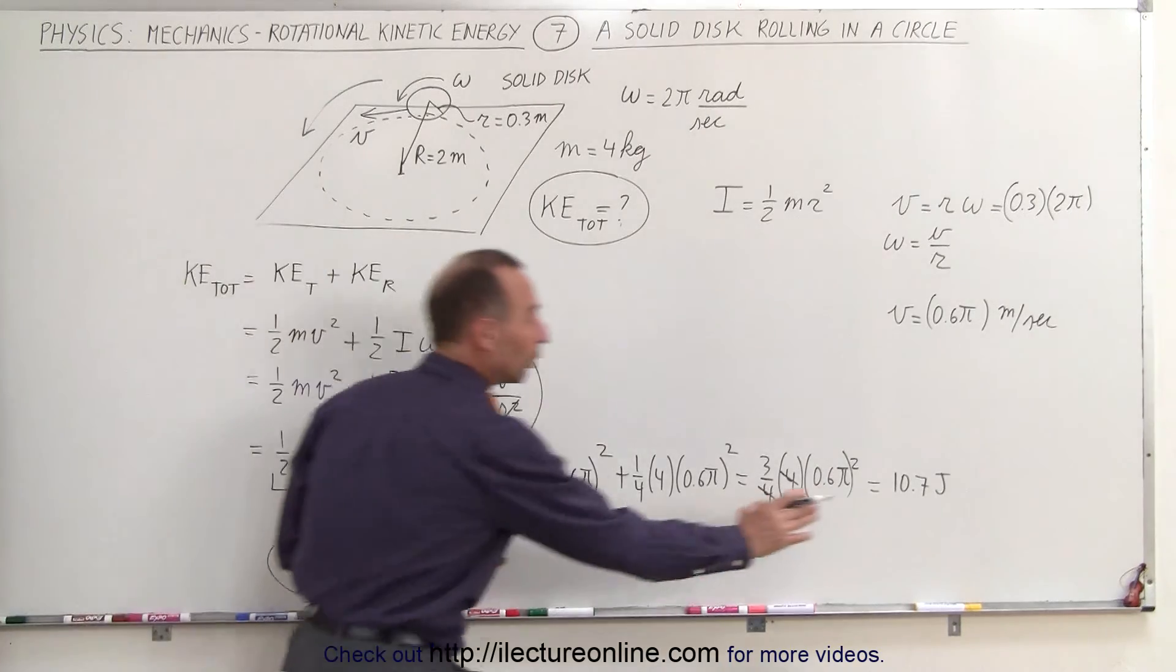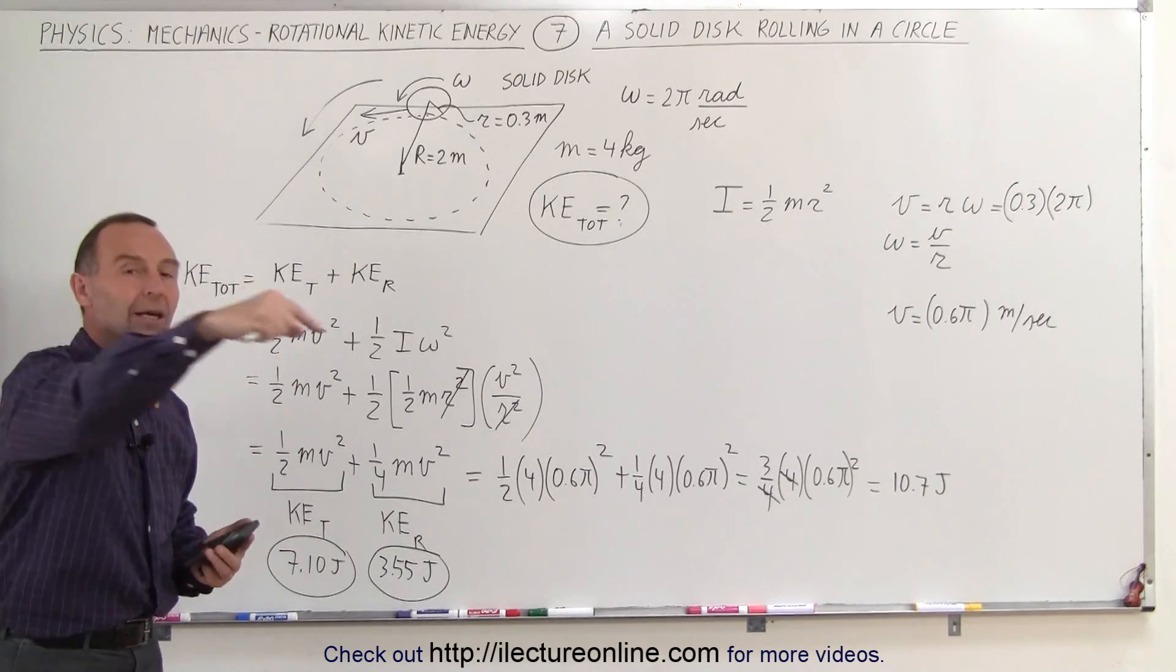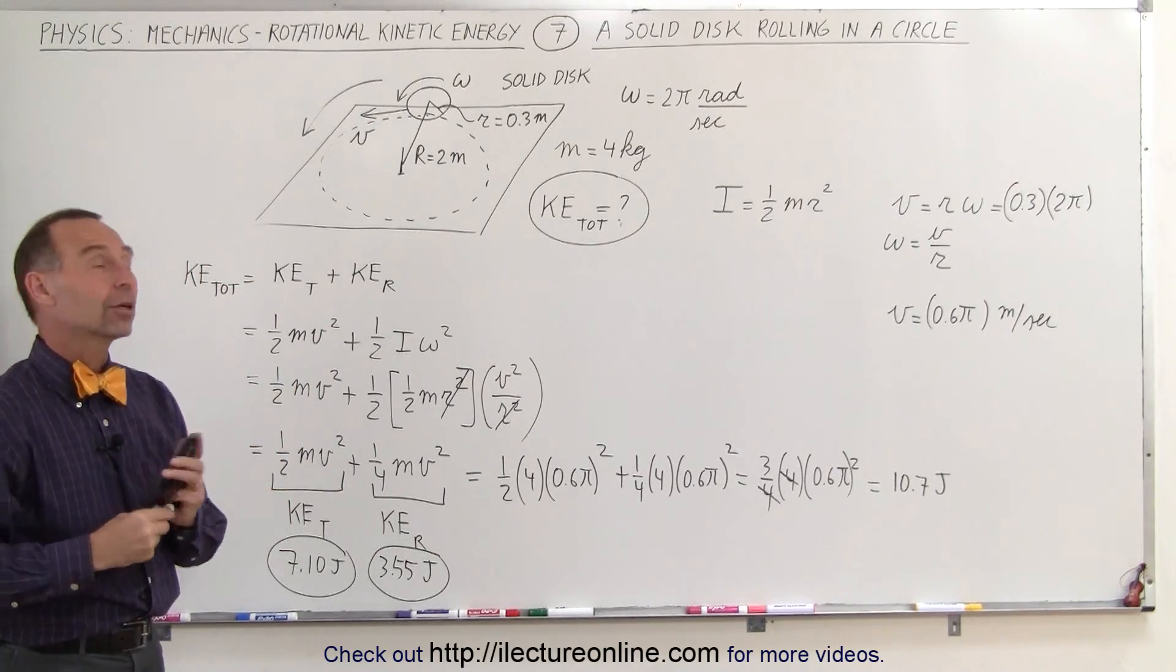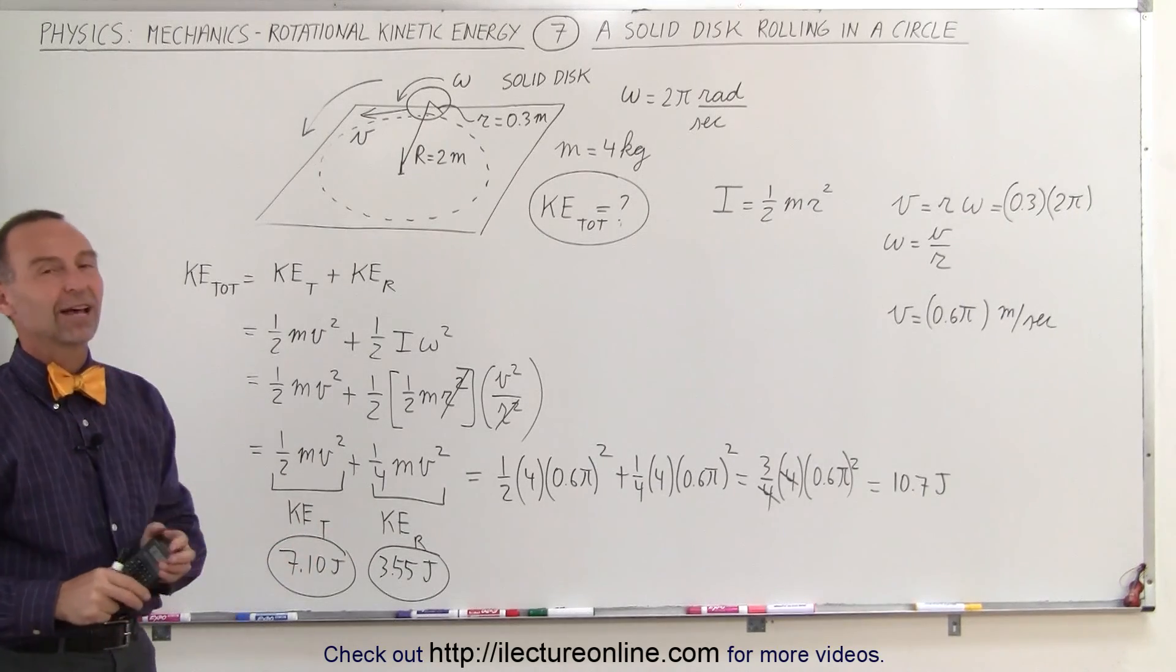That's the total kinetic energy of a disk that's rotating on its axis while it's rotating around the center. Now take a look at the previous video, compare the two, and see where the difference is. That's how it's done.